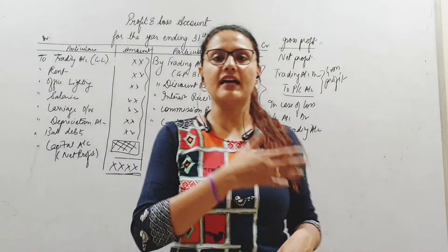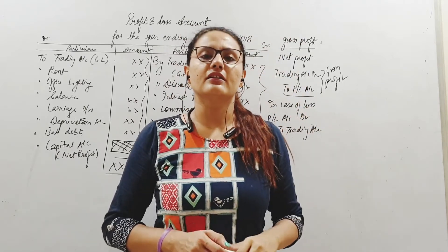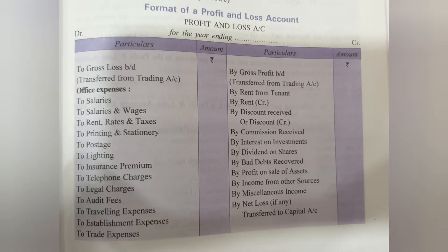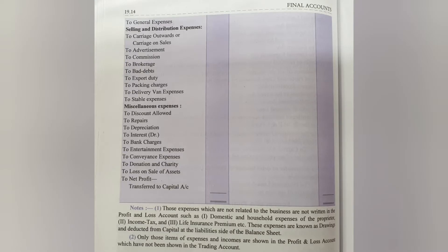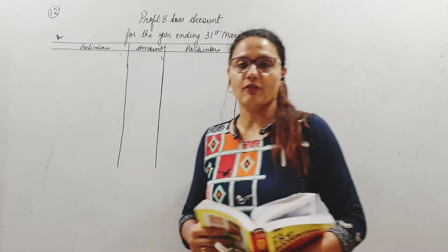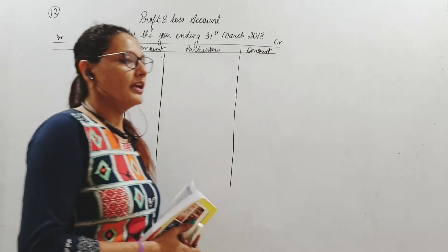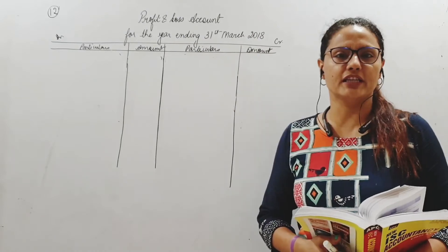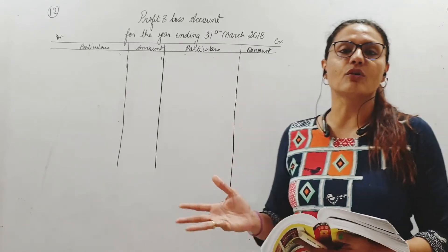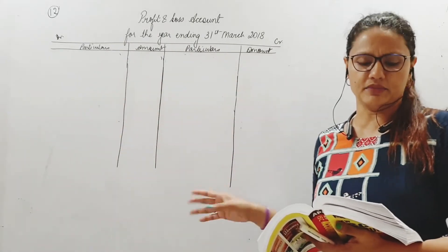Let us take a look at the format of the profit and loss account, which is also given in your book, so that you have an idea about what are the usual items that will appear. Before we move on to a sample, once you've had a look at the format, you'll see what types of expenses and incomes come in. Now the sum I've given — sum number 12 of DKOL — is a pretty simple sum. We just have to understand that all direct expenses have gone to the trading account; what is left are indirect income and indirect expense items.